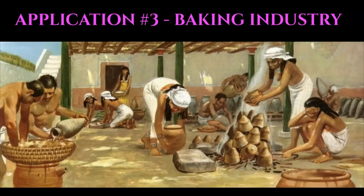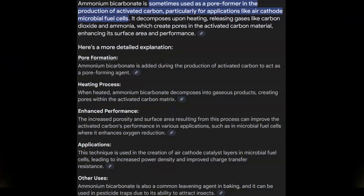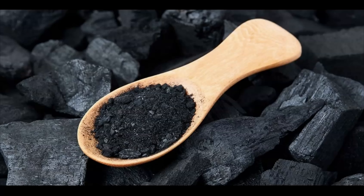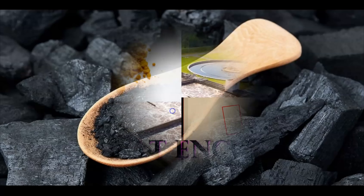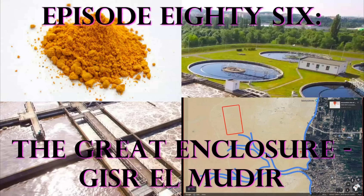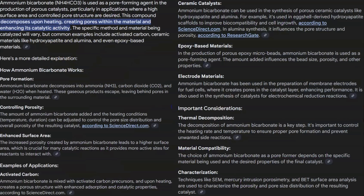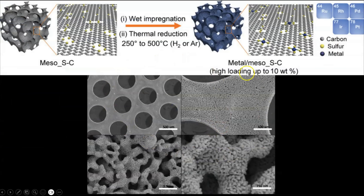The first being the production of highly porous activated carbon, a substance and concept first introduced back in episode 86 regarding the function of the Gizr-el-Mudir water purification facility. And second, for the manufacture of highly porous catalyst material, a process that creates materials with exponentially increased surface area, maximizing catalyst efficacy. So now that the value and applications for this product have been established, let's move on to how the system works.